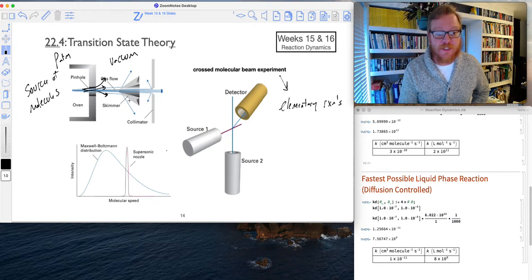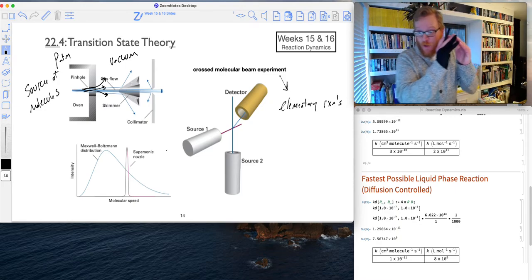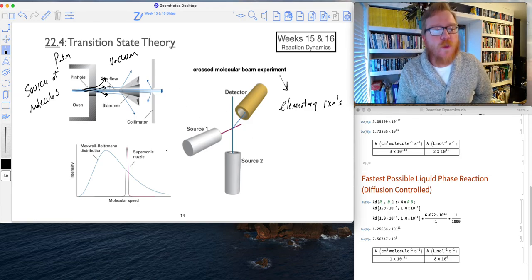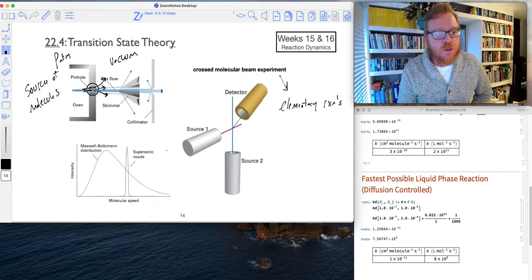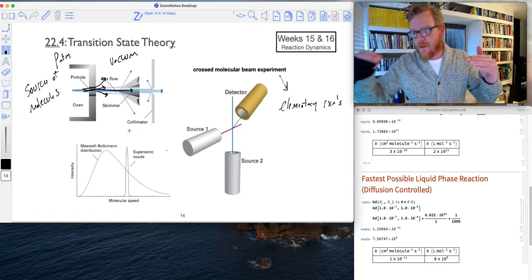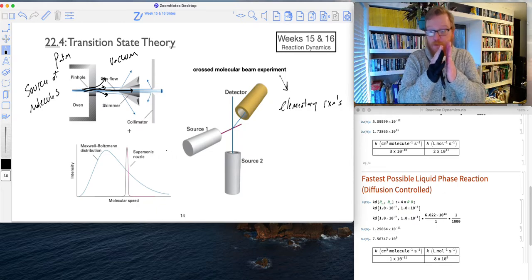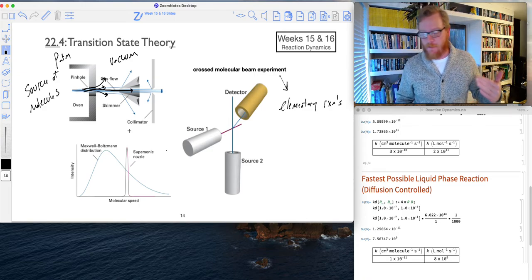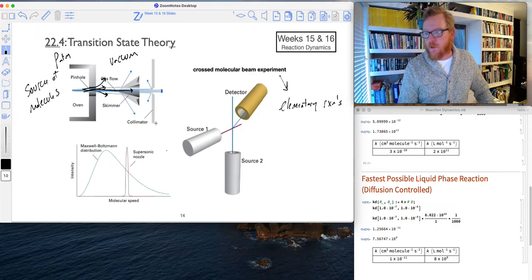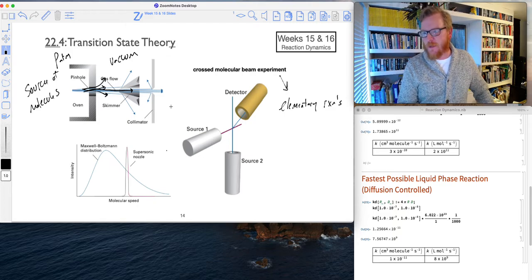However, if you put a device in here called a skimmer, and it really is just a simple cone, it's like a cone with another pinhole, then what happens is only molecules with the right trajectory will make it through. And in fact, you usually have to use several of these skimmers in series to really funnel down your beam. And so you also use a device called a collimator. And so that also has a similar effect as the skimmer. So this is obviously a pretty simplified diagram.